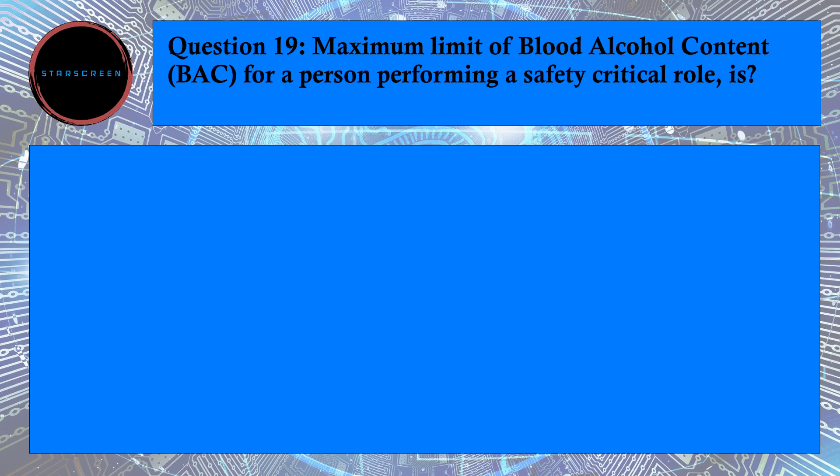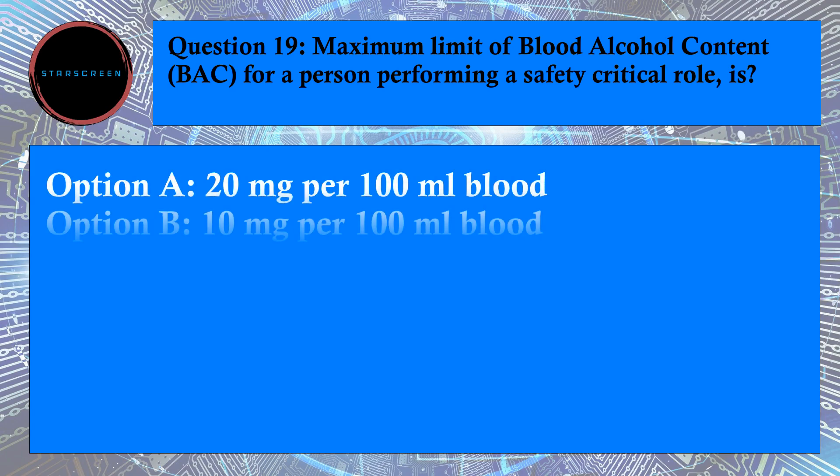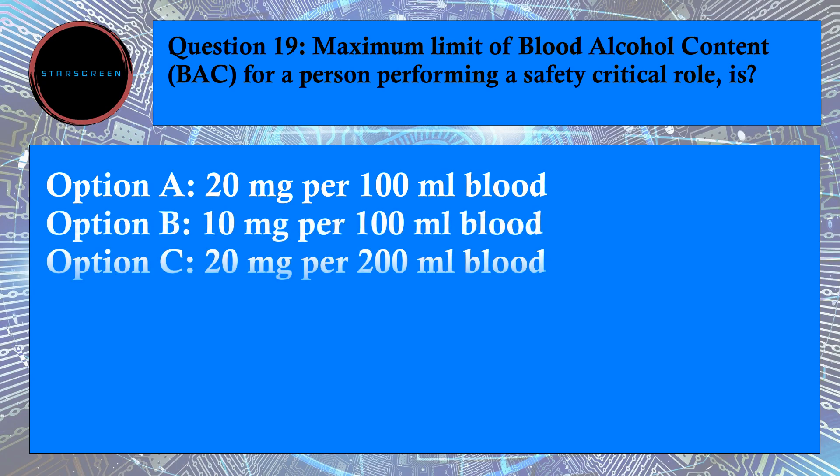Question number 19: Maximum limit of blood alcohol content for a person performing a safety-critical role is Option A, 20 mg per 100 mL blood, Option B, 10 mg per 100 mL blood, and Option C, 20 mg per 200 mL blood. Correct answer is A, 20 mg per 100 mL blood. For answer, refer to CAP715, Chapter 4, Paragraph number 6.2.